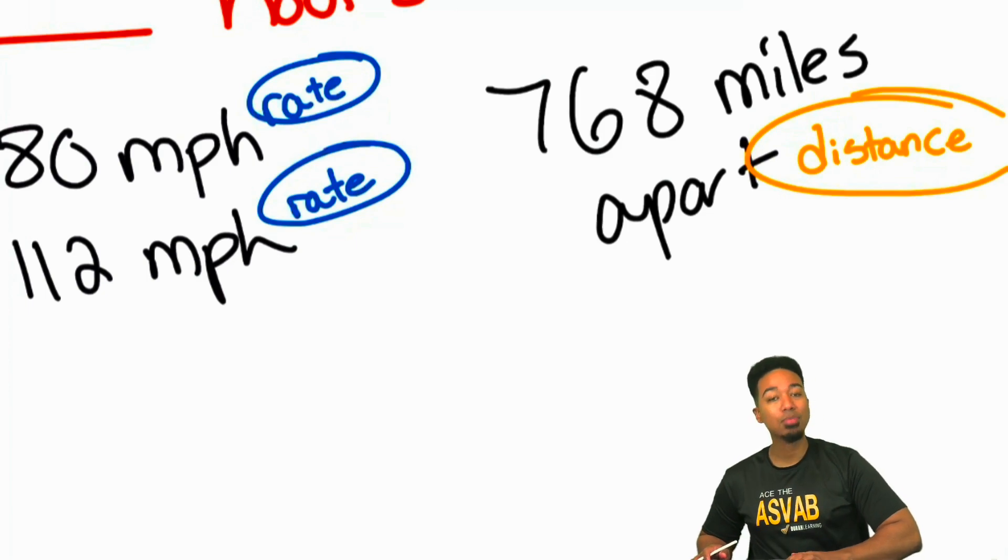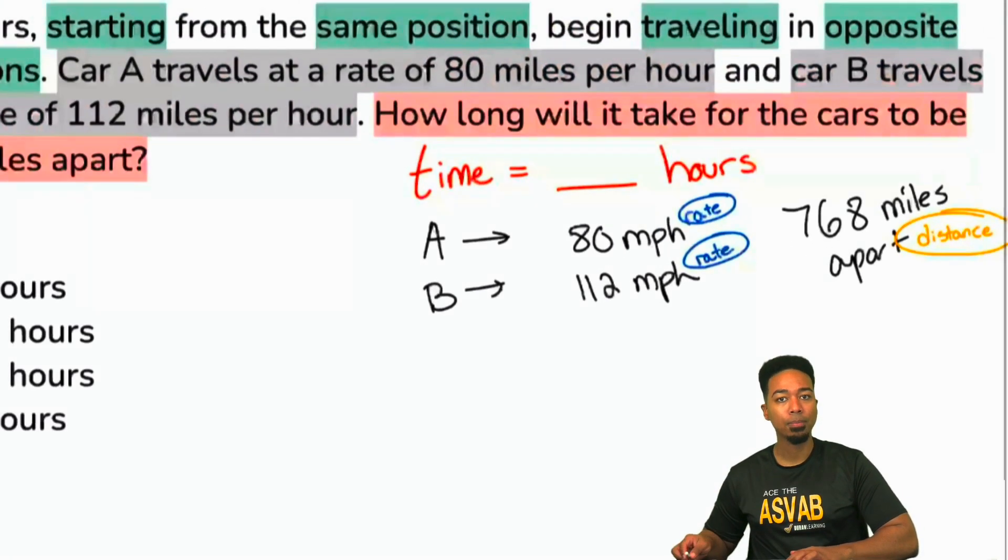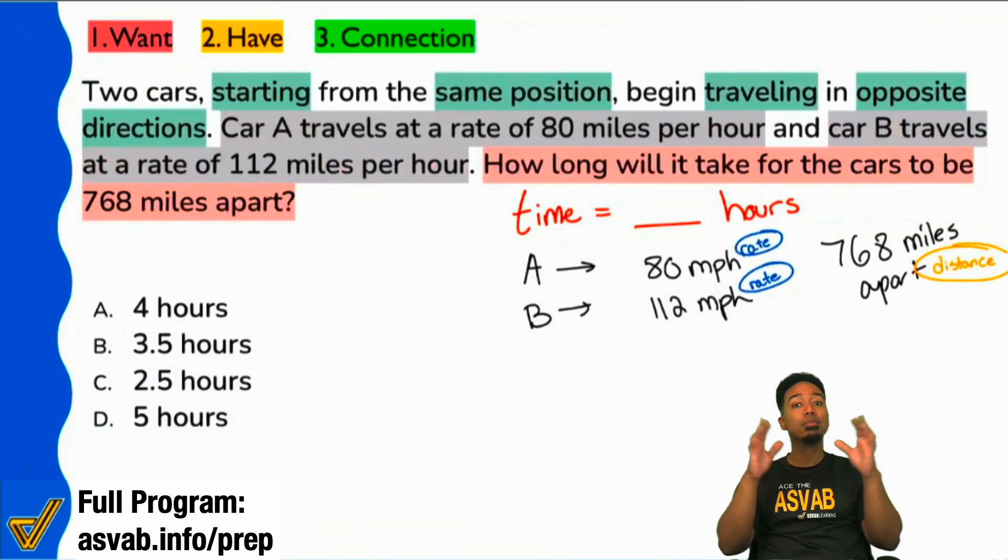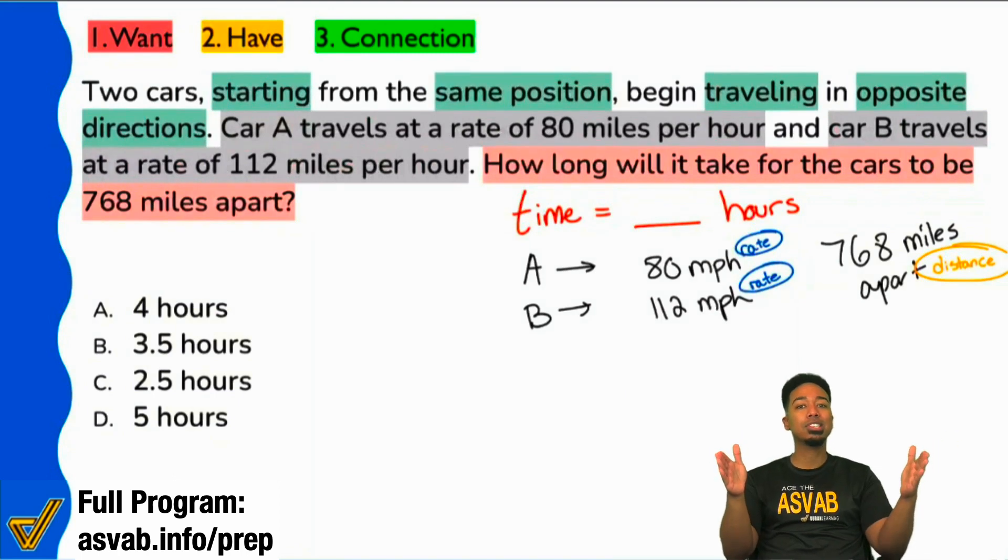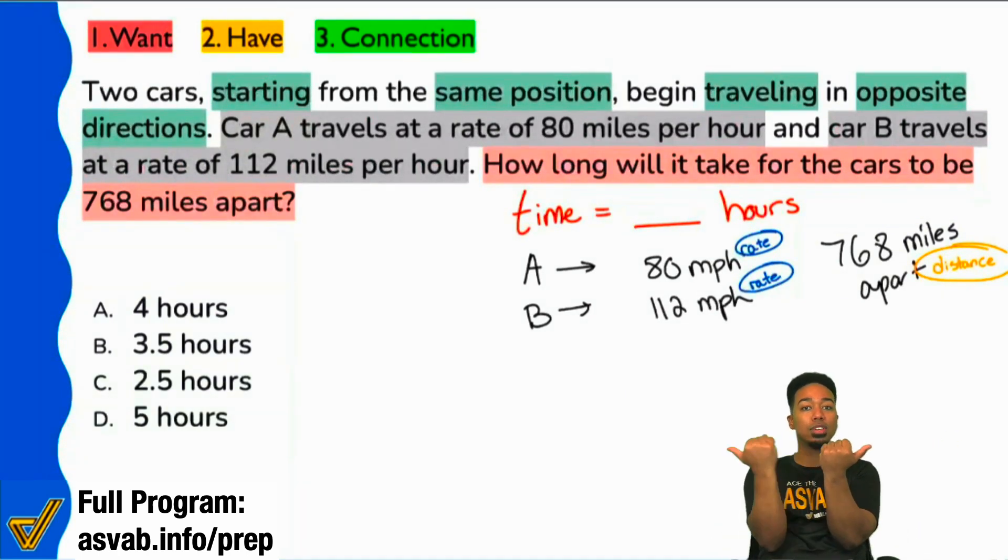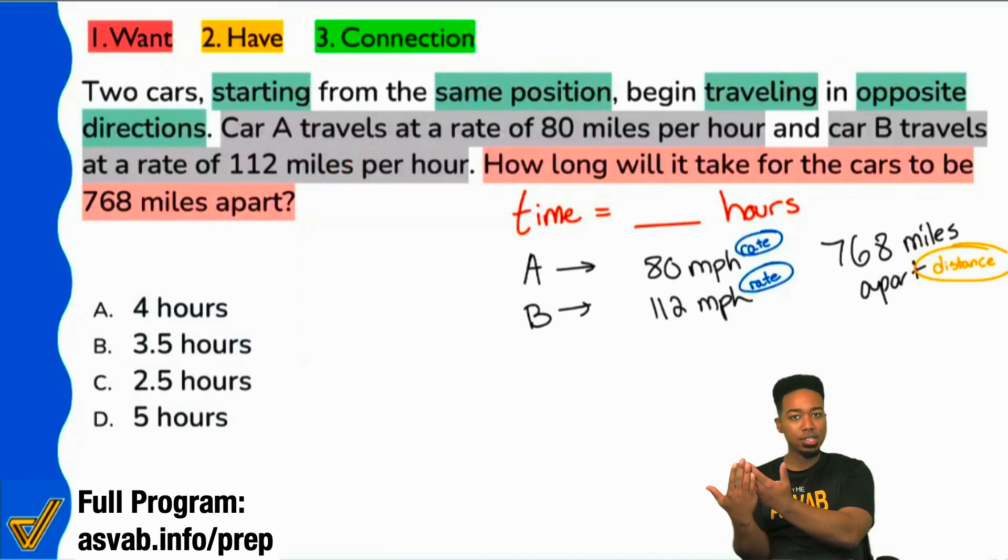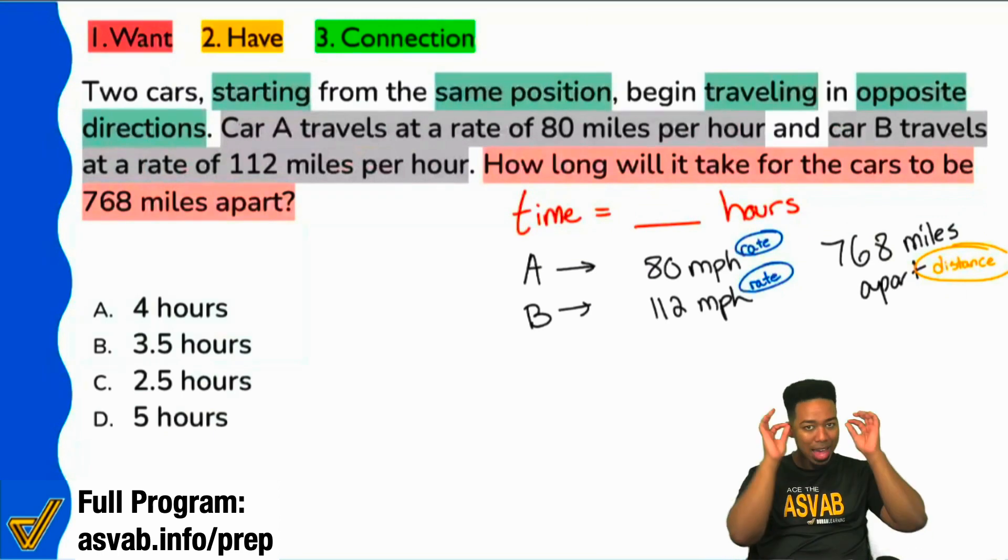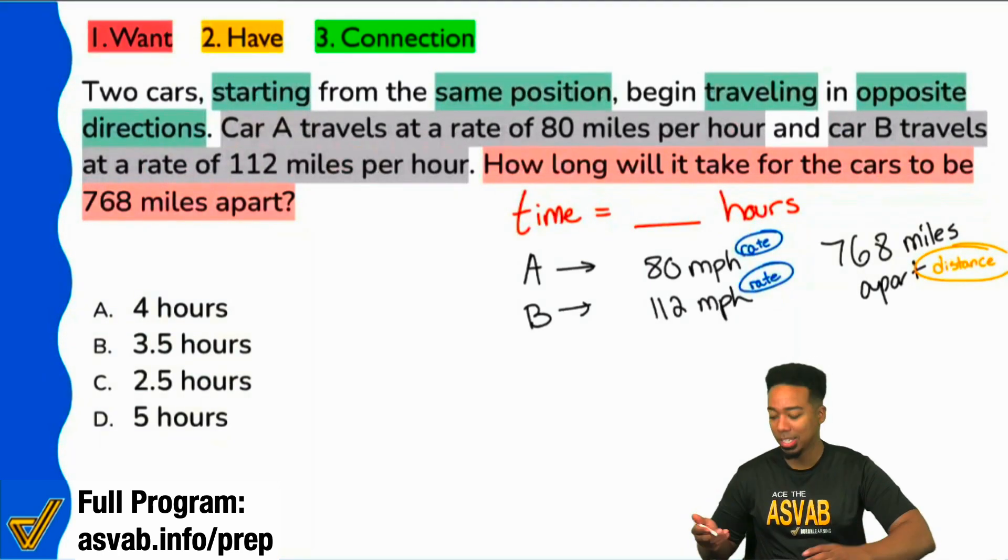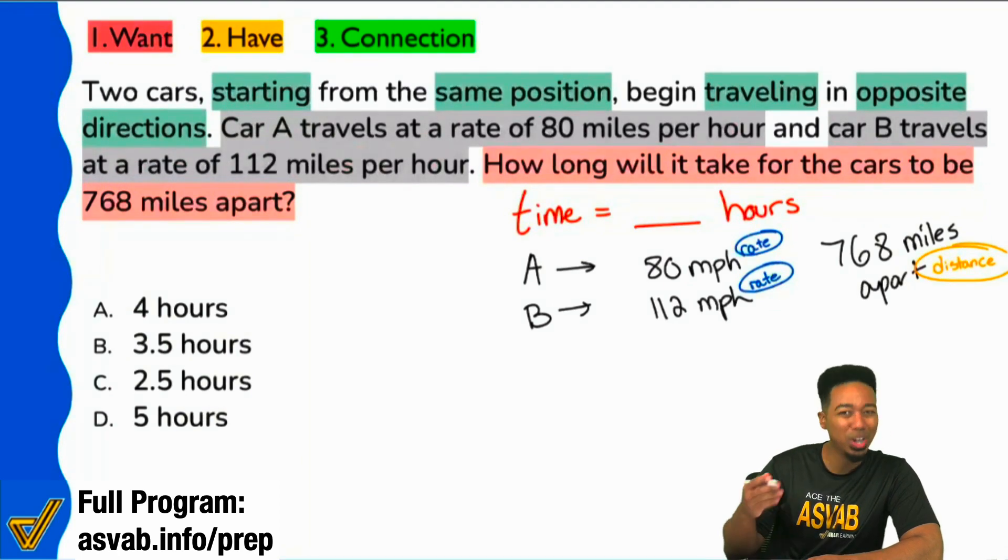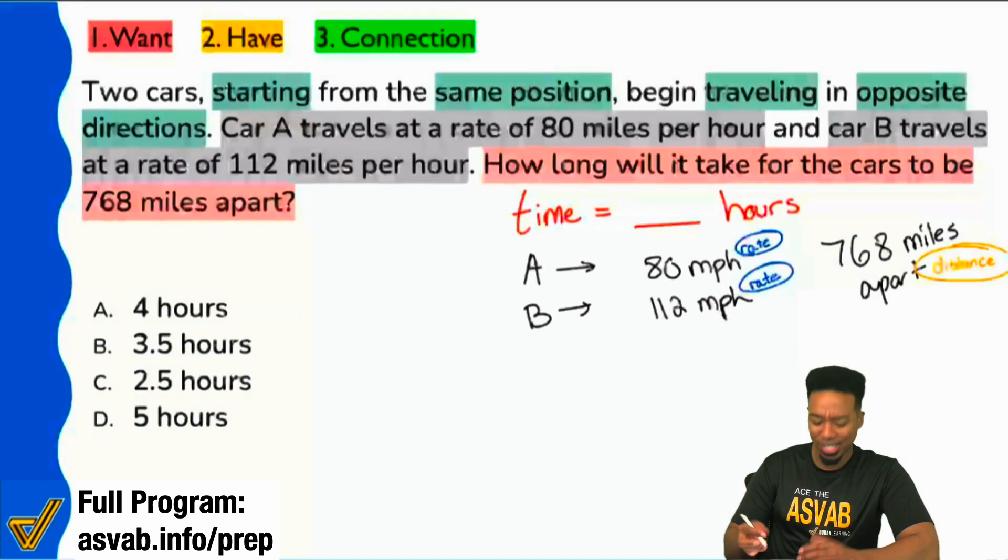So now that we've identified what we're dealing with, now we can look at the grand scheme of things. We're looking for the time it takes for these two cars to get 768 miles apart. They are driving in opposite directions. We have the distance, we have these two rates, we're looking for time. That is going to trigger us to say clearly this is distance rate time, but there's one little caveat.